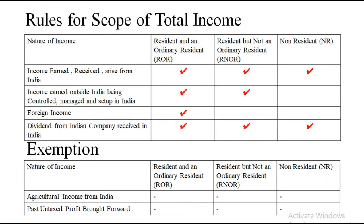Following are the few rules that you need to keep in mind before solving scope of total income. Under scope of total income we have to segregate the amount and we have to say it is taxable for whom — resident and ordinary resident, resident but not an ordinary resident, or non-resident. Rule number one: if any income is earned, received or arises from India, everyone will pay tax for it.